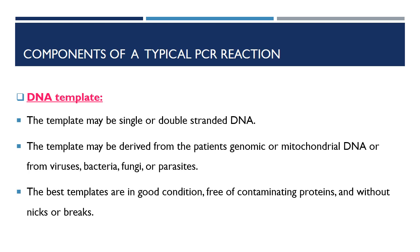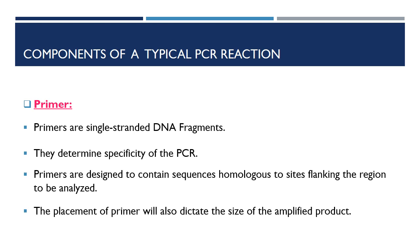Templates with high GC content and secondary structures may prove more difficult to optimize for amplification. Primers are a critical component of the PCR because they determine the specificity of PCR. They are chemically manufactured on a DNA synthesizer and are analogous to the probes in blotting and hybridization procedures. Primers are single-stranded DNA fragments, usually 20 to 30 bases in length. The forward primer must bind to the target DNA sequence just 5 prime to the sequences intended to be amplified.